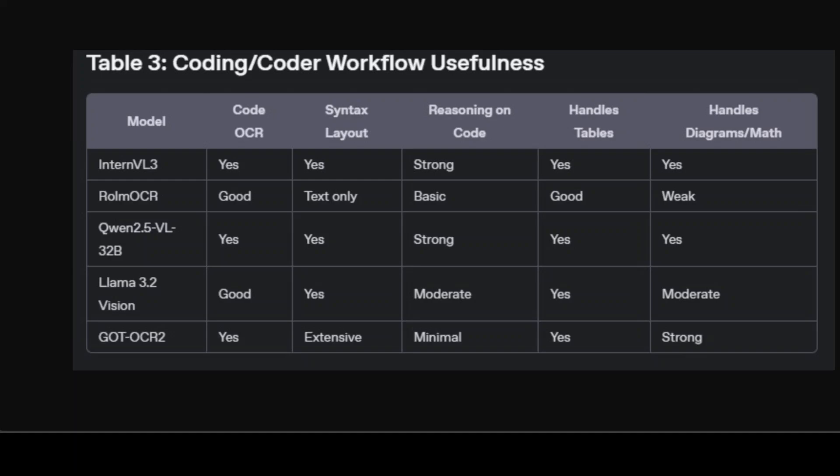Another very common use case I've found from various clients is coding or coder workflow usefulness. InternVL3 and Qwen 2.5 VL 32 billion are the clear choices if your workflow has code snippets, tables, or diagrams, as both parse structure well and handle reasoning on code. RO LM OCR is okay for text extraction — like getting code from a PDF — but won't really help with layout or syntax highlighting. Llama Vision can do some syntax and basic code OCR but is not really optimized for logic-heavy tasks. GOT-OCR2 stands out for anyone needing raw OCR on code, tables, sheet music, or math — though if you need explanation or debugging, it may fall short, but perhaps in the next version.